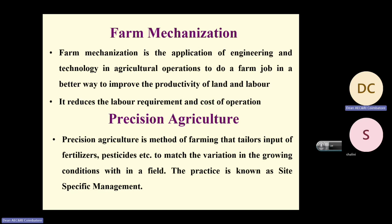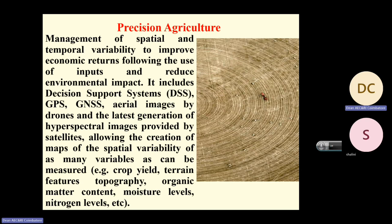Now we are in the era of precision farming. Precision farming is the method of farming that tailors inputs of fertilizer, pesticides, etc., to match the variation in growing conditions within a field. This practice is known as site-specific management.